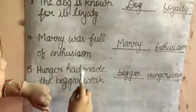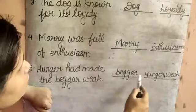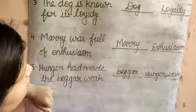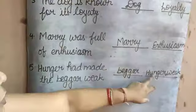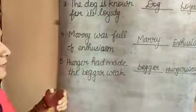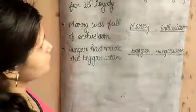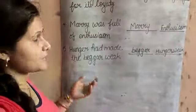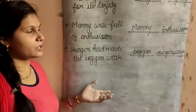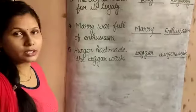'Hunger had made the beggar.' The beggar is Concrete — as you can see. Hunger is Abstract Noun. So your lesson is finished. This is the Noun, and the next chapter is the next step. You should have written it and revised it. Thank you.